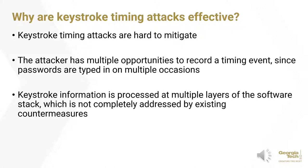Let's ask why keystroke timing attacks are so effective. Firstly, keystroke timing attacks are hard to mitigate because an attacker only needs to probe a single spot in the keystroke path in order to track activity. On top of this, an attacker will have multiple opportunities to record a timing event, since a user might type in their password several times in one session. Although these traces might have variations in timing, it allows the attacker to collect a higher number of samples and observe a victim's typing behavior, allowing a more sophisticated attack. Furthermore, a keystroke event is processed at several layers of the software stack, opening many side channels and vulnerabilities. We'll see later that the existing countermeasures do not protect the entire stack, which opens up possibilities for attacks.